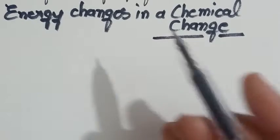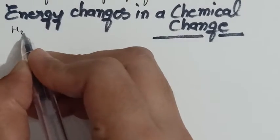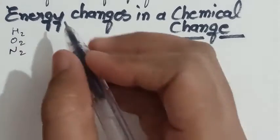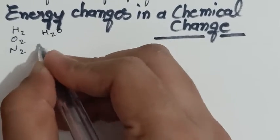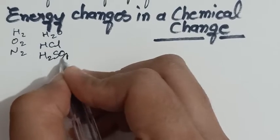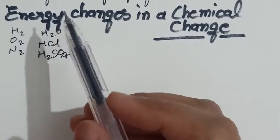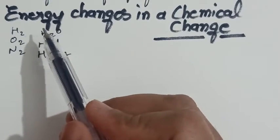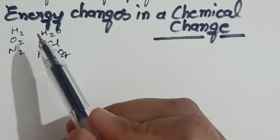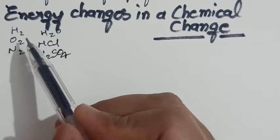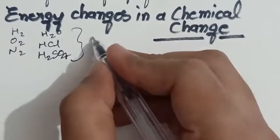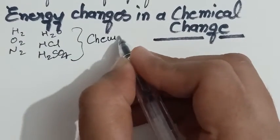Every substance, whether an element like H2, O2, N2, or a compound like H2O, HCl, H2SO4, they are all associated with a certain amount of energy which is stored in them in the form of potential energy or latent energy. This stored energy is commonly called chemical energy.